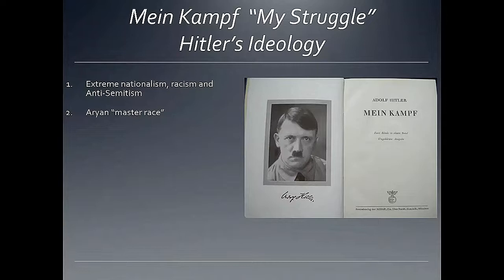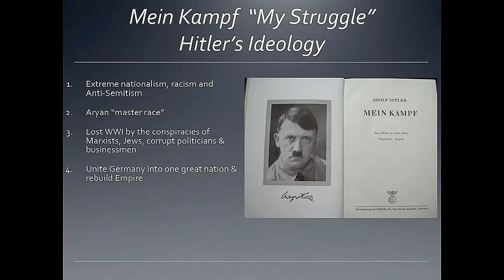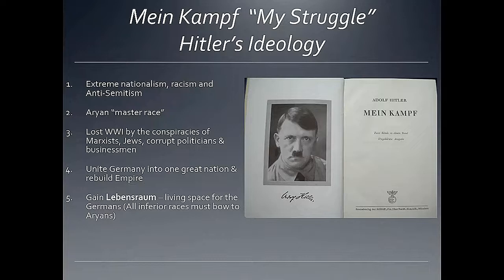The great enemy of the Aryan race, in Hitler's eyes, were the Jewish people. World War I was not lost because the German army was defeated, but because of conspiracies of Marxists, Jews, and corrupt politicians — people behind the scenes who wanted Germany to fail. Hitler also argued Germany needed to unite again into a great nation and rebuild the empire — a Third Reich. To do this, Germany would need to gain back Lebensraum, or living space, taken away as a result of World War I, with inferior races required to hand over that land.